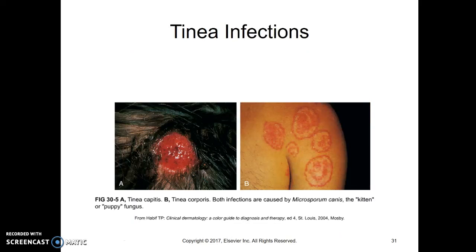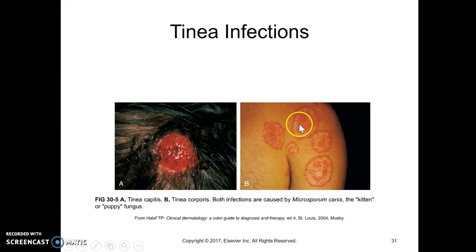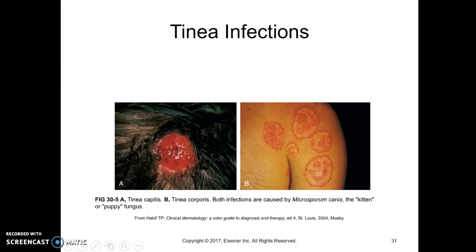Other skin infections: tineas are fungal — tineas are ringworm. Here's one on the head; we describe them by where they are. This is tinea capitis because it's on the head. You can see they've spread around — they have this white flaky part and the red ring around it, and then just a few little red bumps here and there. Mostly it's the white flaky inside and the red ring outside. They are a fungal infection, so we treat them with an antifungal. It's usually about six weeks of doing cream on it — it's just a slow process to get rid of them.